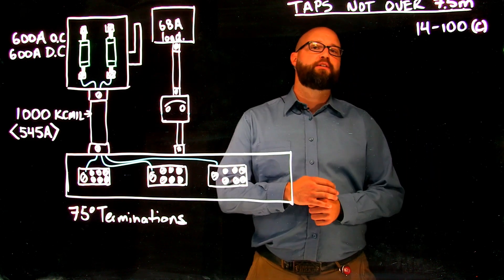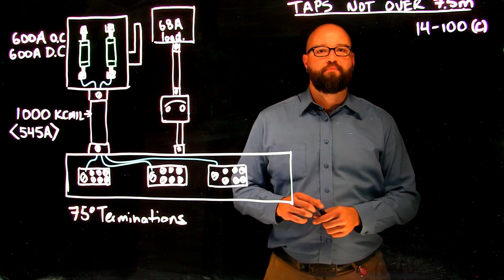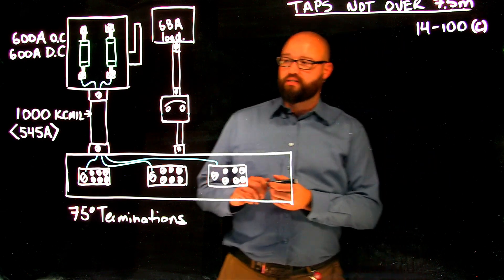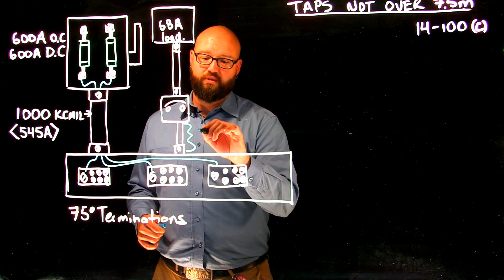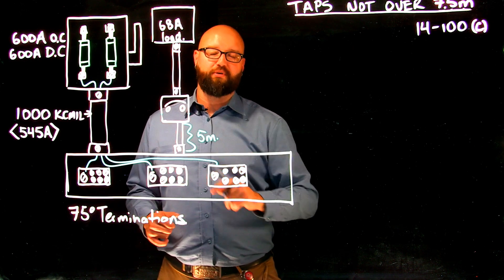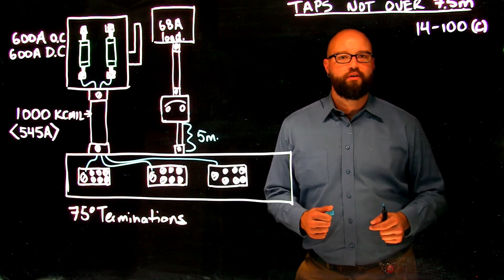In this video we are looking at tap conductors that are over three meters but not over 7.5 meters. So we're gonna take a look. Here's our tap conductor. This is we're gonna say five meters. That puts us above the three meter mark but under the 7.5 as required by 14100C.